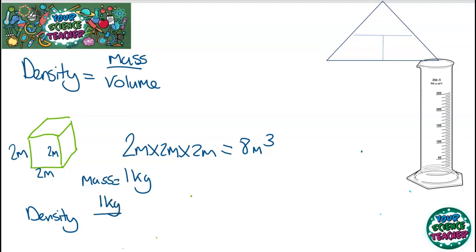...it would have a density of one kilogram divided by eight meters cubed, which equals 0.125 kilograms per meter cubed. Look how easy it is for me to do units because I put them in my question. Make sure when you're doing calculations to put units in because that makes calculating what your units are very simple.